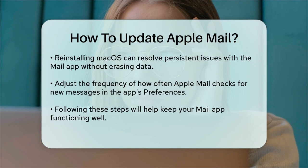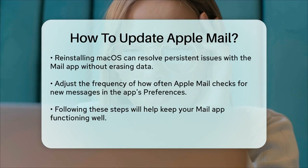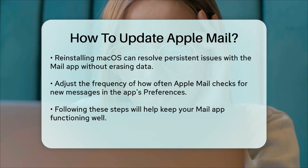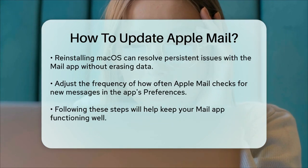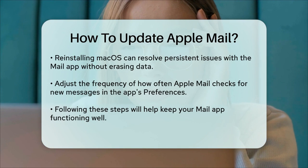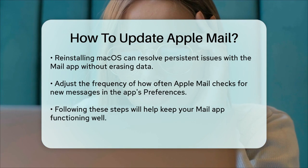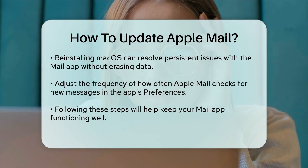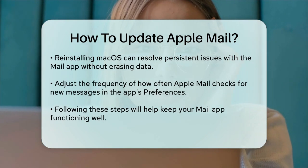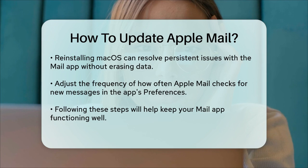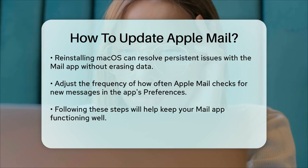To adjust how often Apple Mail checks for new messages, you can go into the Mail app settings under Preferences and modify the Check for New Messages frequency. This can help ensure you're always up to date with your emails, even if the app itself isn't updated independently.